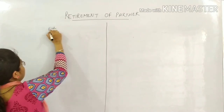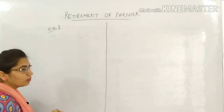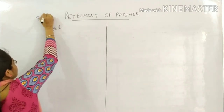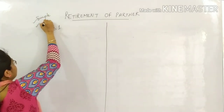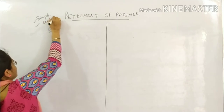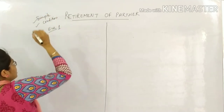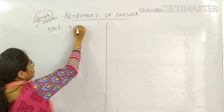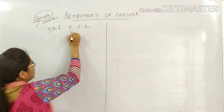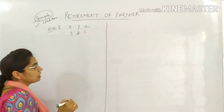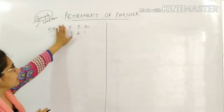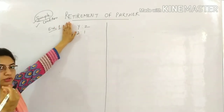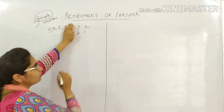Let's take Example 1. To calculate the new profit sharing ratio, we have two methods: the first is the simple method and the second involves a specific condition or situation. Right now we are doing the simple method. Let's take an example: X, Y, Z are partners having profit sharing ratio 3:2:1. When X retires from the firm, Y and Z will remain.